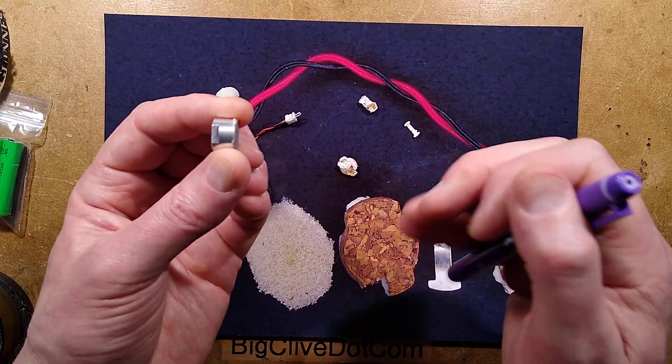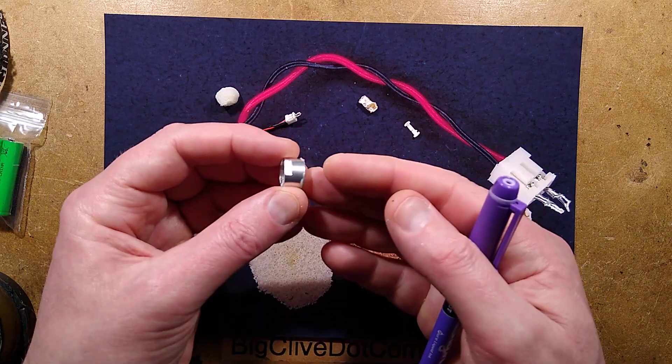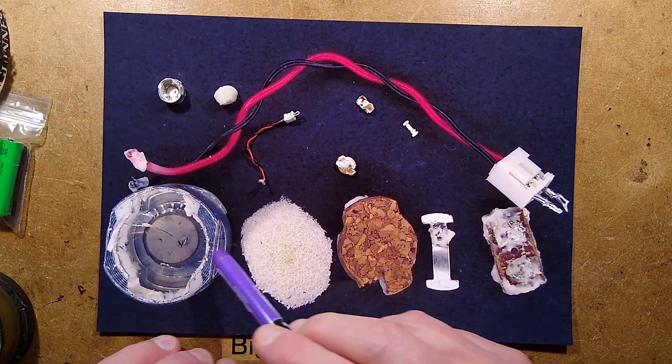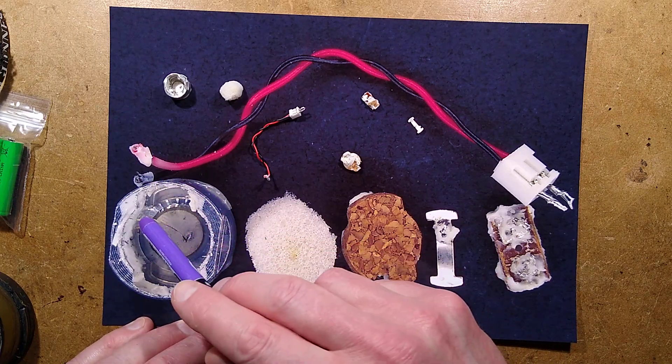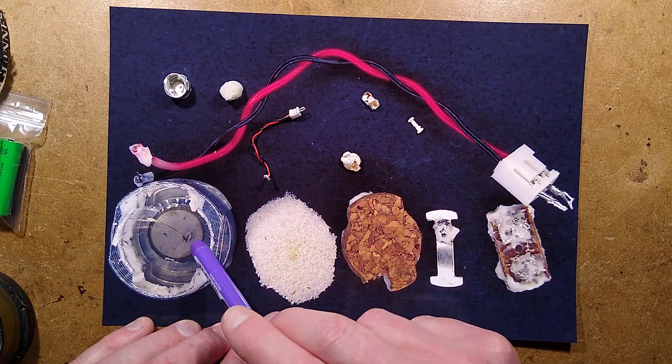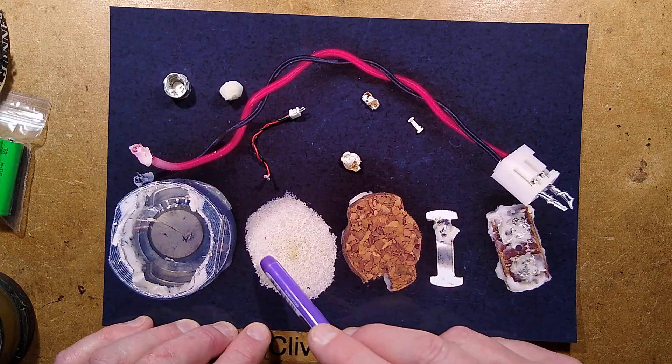At the bottom of this aluminium cup, the bit that actually goes on, and it looks like a proper, decent transducer, is the piezoelectric disc, with possibly one connection onto the aluminium cup and the other connection, this very fine wire going onto the top. Then was this piece of foam.